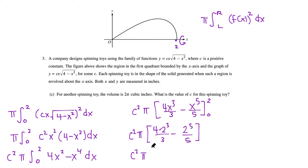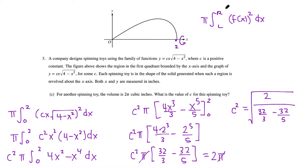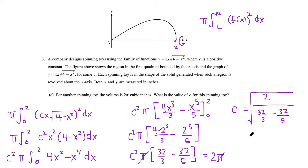Simplifying: 4 times 8 is 32, and 2 to the fifth is also 32, giving 32/3 minus 32/5. Since the volume equals 2π, we set c²π(32/3 − 32/5) = 2π. The π's cancel, so c² = 2 / (32/3 − 32/5). Taking the square root of both sides gives c. On the non-calculator section, you don't need to fully simplify.